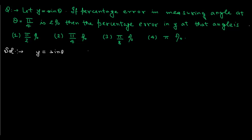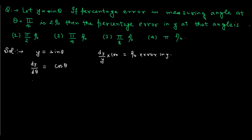We have to find the percentage error in y, so for this we need dy/y, which is the relative error in y. If we multiply dy/y with 100, we will get the percentage error in y. For this, we have to differentiate this equation. Here y depends on θ, so dy/dθ gives us cos θ.